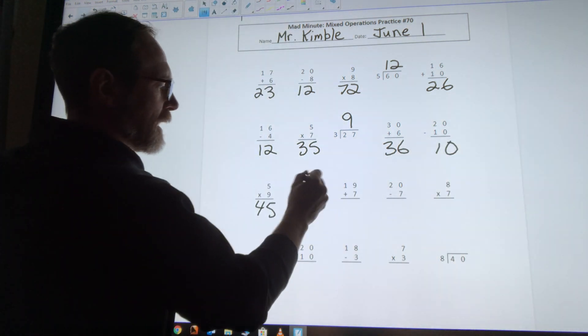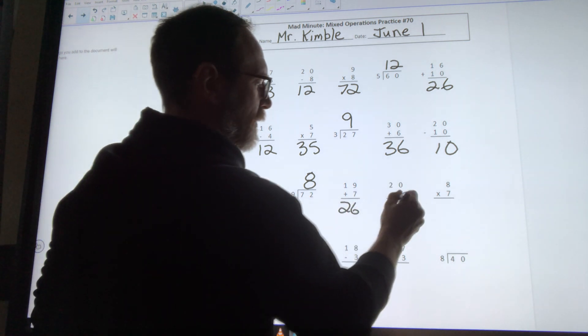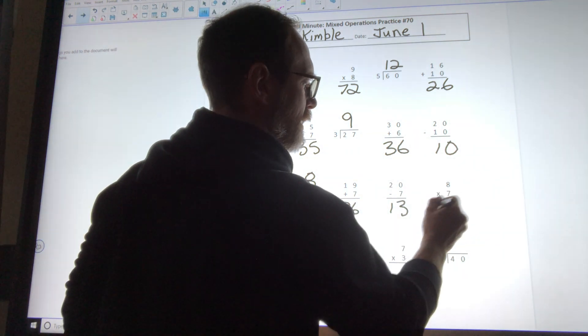72 divided by 9 is 8, 19 plus 7 is 26, 20 minus 7 is 13, 8 times 7 is 56.